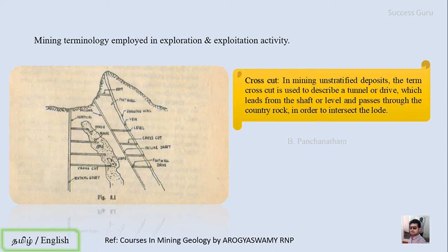The next term is cross cut. In mining an unstratified deposit — one not having a defined geometric shape — the term cross cut describes a tunnel or drive that leads from the shaft or level and passes through the country rock in order to intersect the lode. So for an unstratified deposit accessed by a vertical shaft, a tunnel moving from the shaft towards the ore body is called a cross cut.